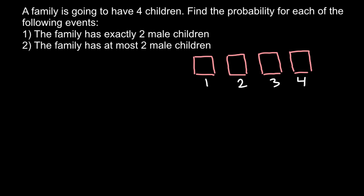How many variants do we have for each child? Two — whether the child is a boy or a girl. The same is true every time they have a child: two variants. To find the total number of combinations of different sexes, we use the product rule and multiply all independent probabilities: 2 × 2 × 2 × 2 = 16. So the total number of combinations is 16.